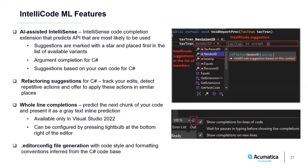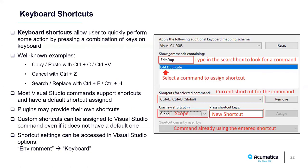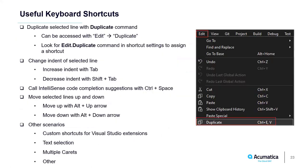Now let's look at keyboard shortcuts. Keyboard shortcuts allow you to quickly perform actions by pressing a combination of keys. Most Visual Studio commands support keyboard shortcuts and have a default shortcut assigned. Plugins may introduce their own shortcuts, and the best thing is that you can assign or reassign your own shortcuts to any Visual Studio command. To access shortcut settings, open the Environment section in Visual Studio Options and find the Keyboard subsection.